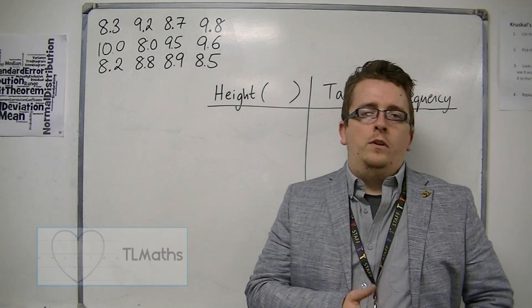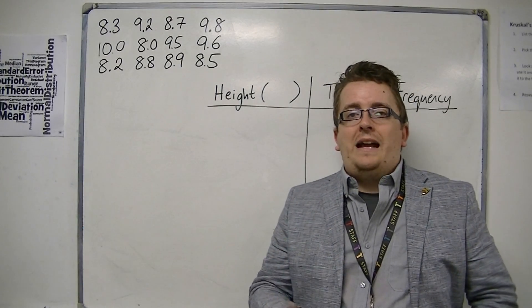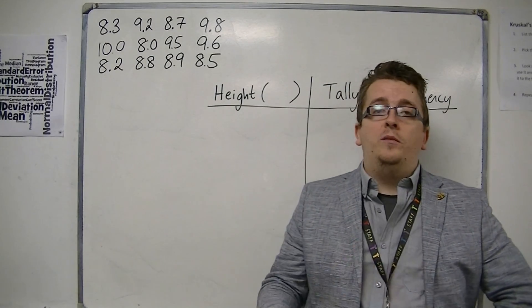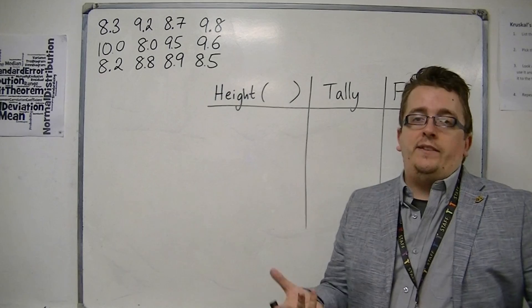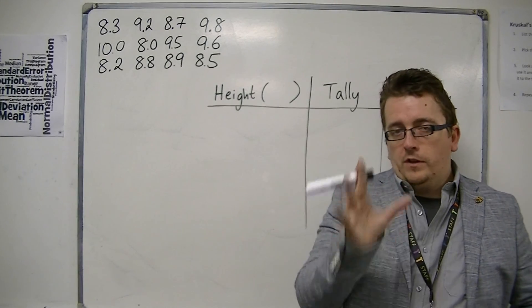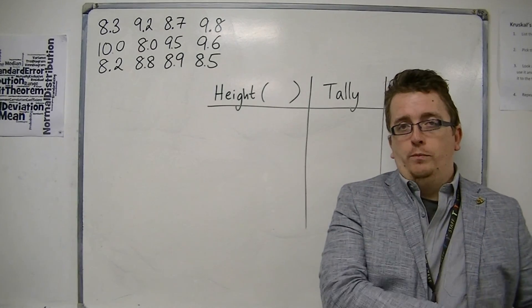So, in the previous video, we were actually looking at the colours of cars in a car park, which is discrete data, because the cars were put into discrete groups.